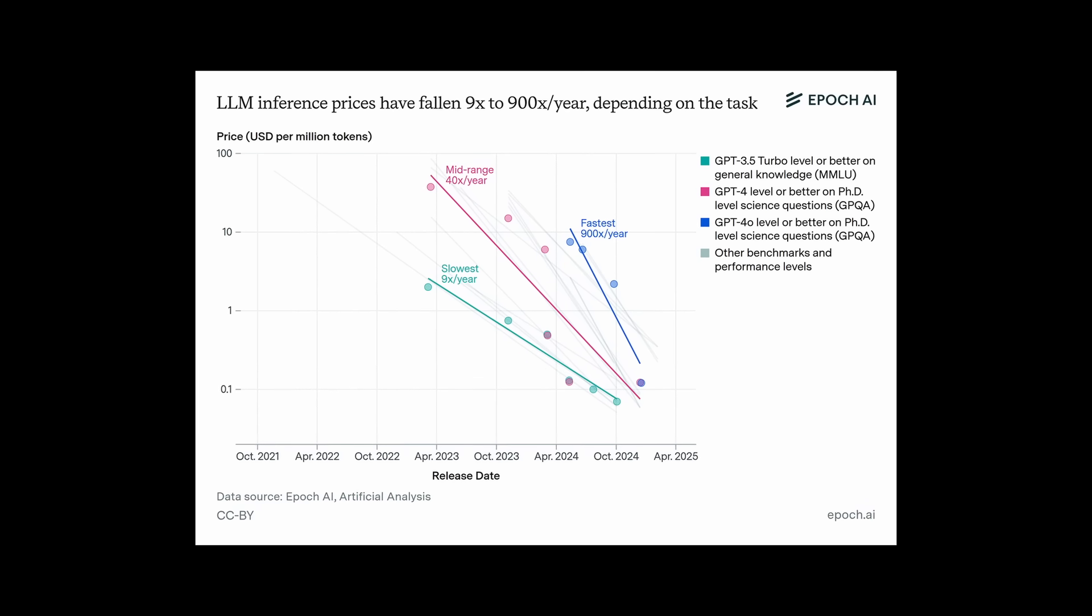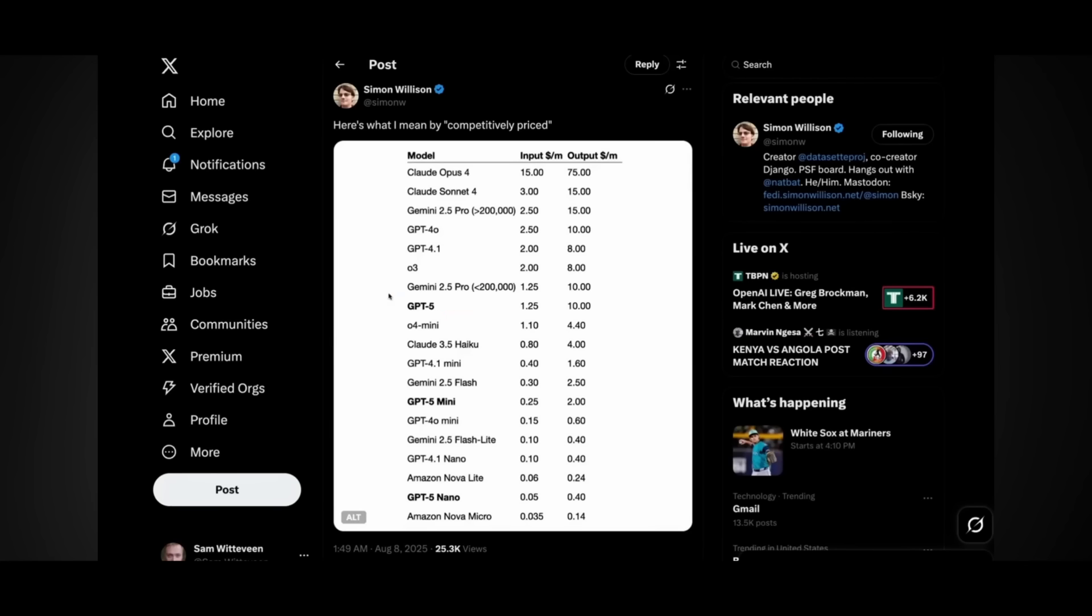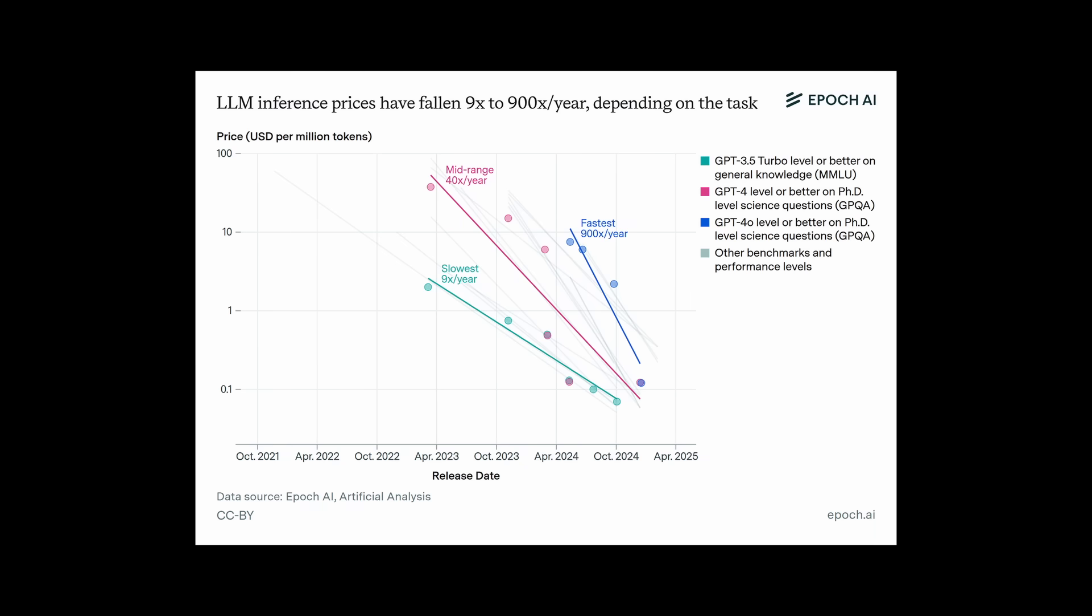We know that the cost of inference has been going down for some time, and the fact that GPT-5 is 7 to 10 times cheaper than the Opus 4.1 and kept the same pricing as Gemini 2.5 Pro seems to indicate that the path to $0 for inference costs is coming very soon.